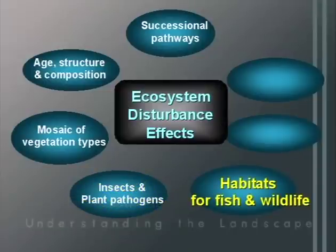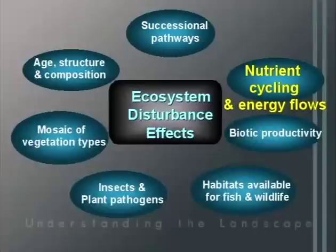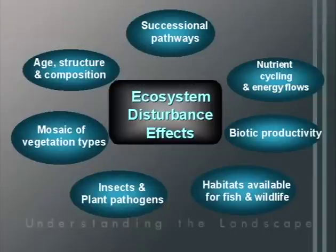Disturbance influences habitats available for fish and wildlife. Many vertebrate species are adapted to early seral post-disturbance environments, while others are adapted to late seral environments that may not become suitable for decades to centuries after the disturbance. Abiotic productivity can be influenced — nutrients may be enhanced or substrates lost. Disturbance also has tremendous impacts on nutrient cycling and energy flows. For example, fire may increase nutrients available to plant growth, but can also volatilize nutrients or cause loss via erosional processes.